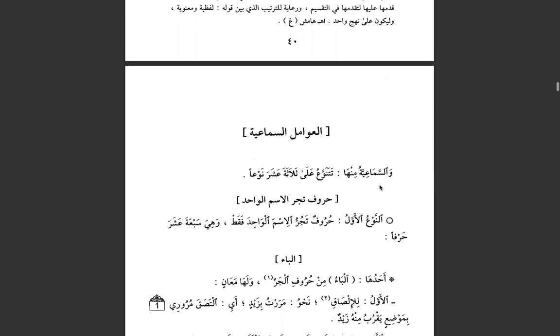It begins now with العوامل السماعية. We can divide the sama'iyya into 13 types. The sama'iyya overall is 91 amil, and these 91 amil can be categorized into 13 categories.